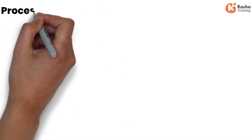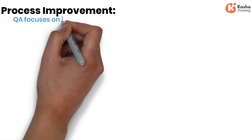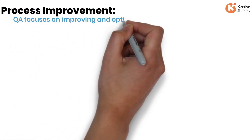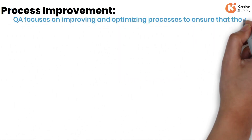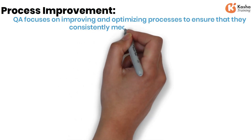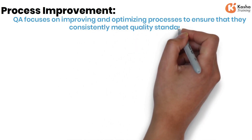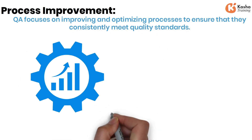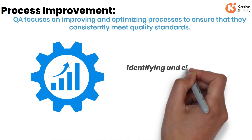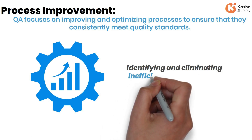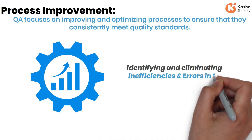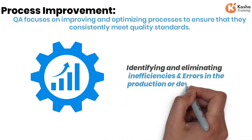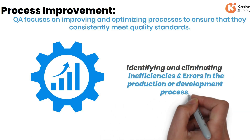Process Improvement. QA focuses on improving and optimizing processes to ensure that they consistently meet quality standards. This may involve identifying and eliminating inefficiencies and errors in the production or development process.